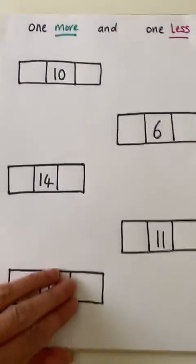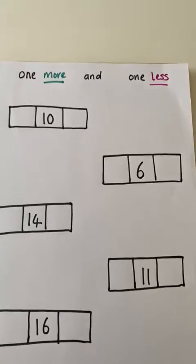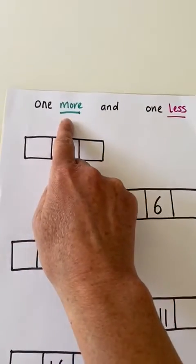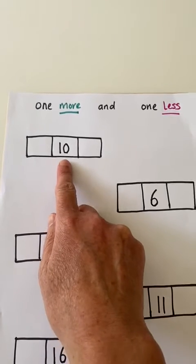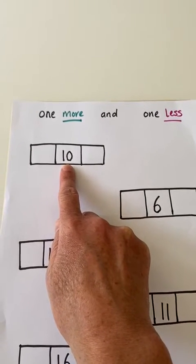Here I have written out some numbers. It says one more and one less. So the first number here you can see is number 10.